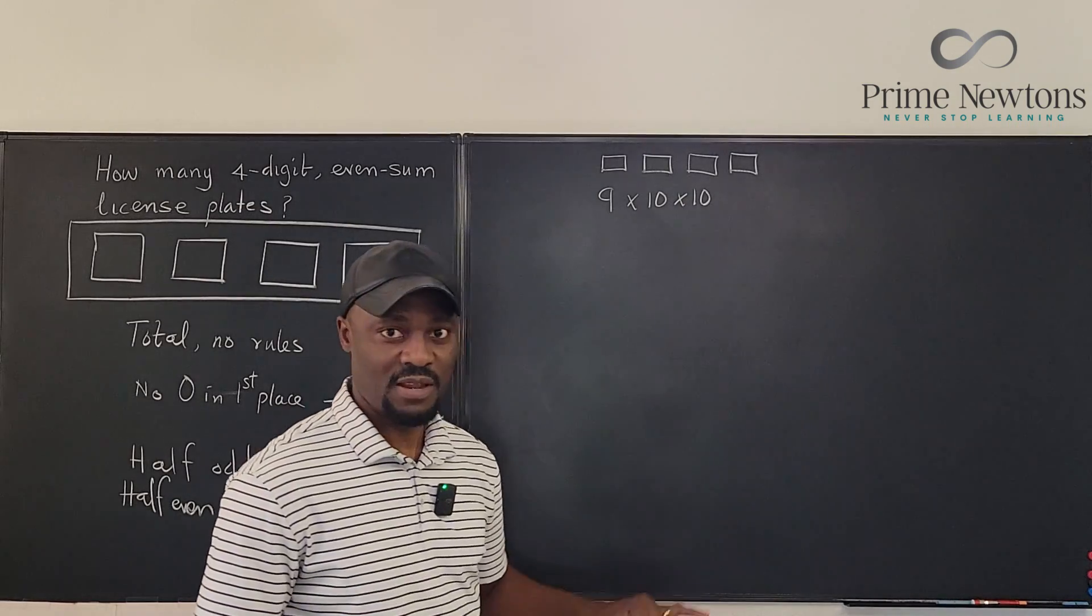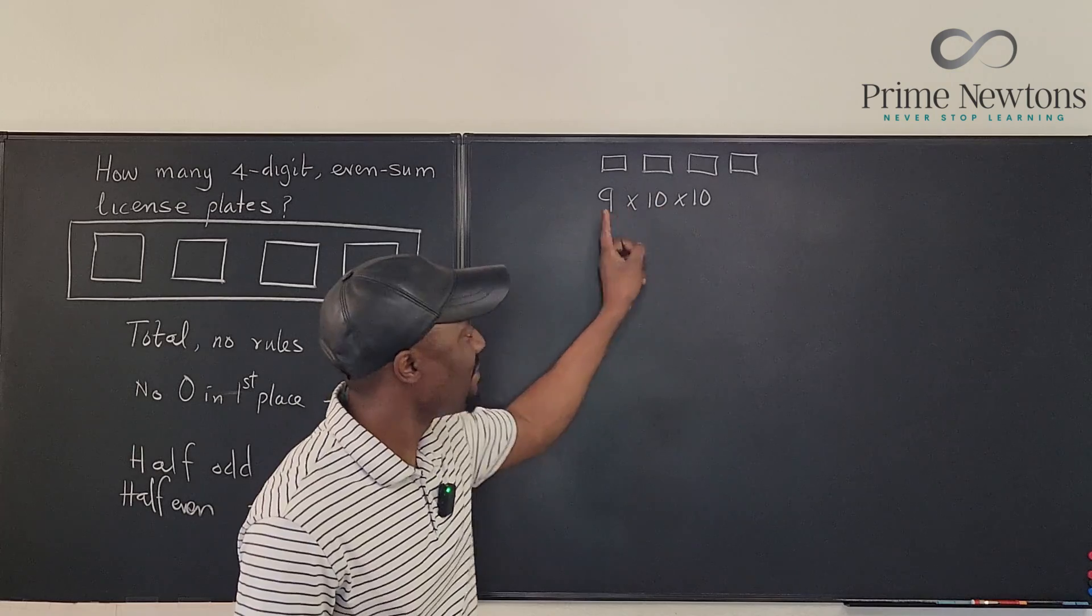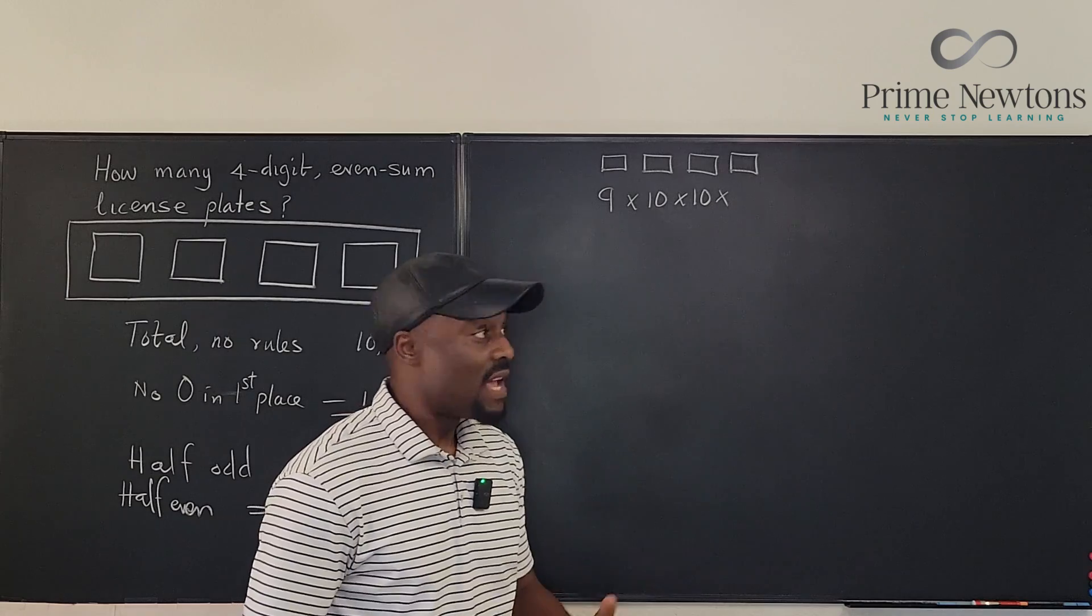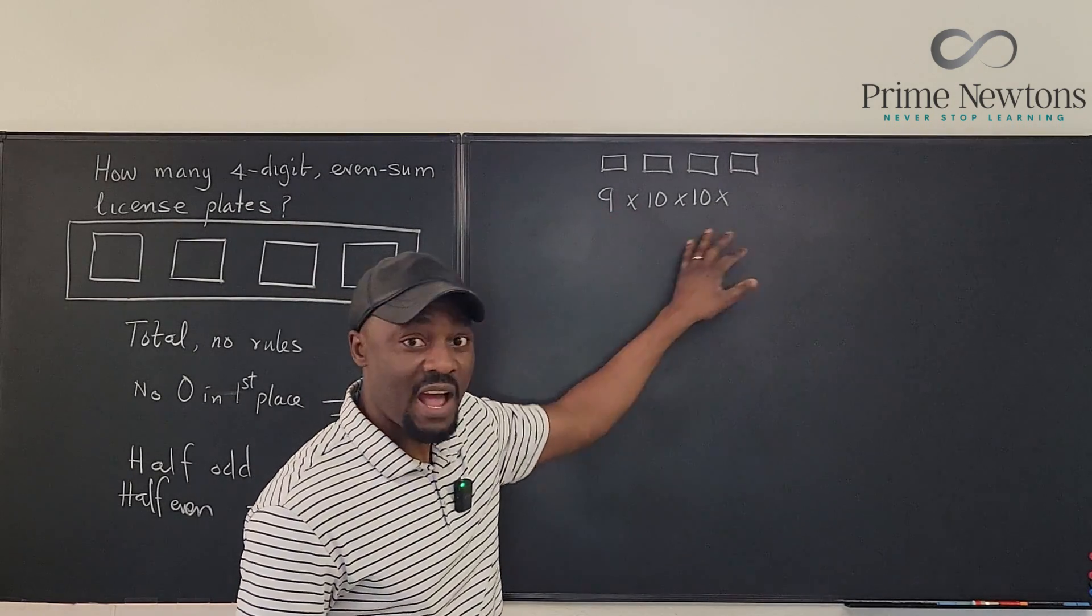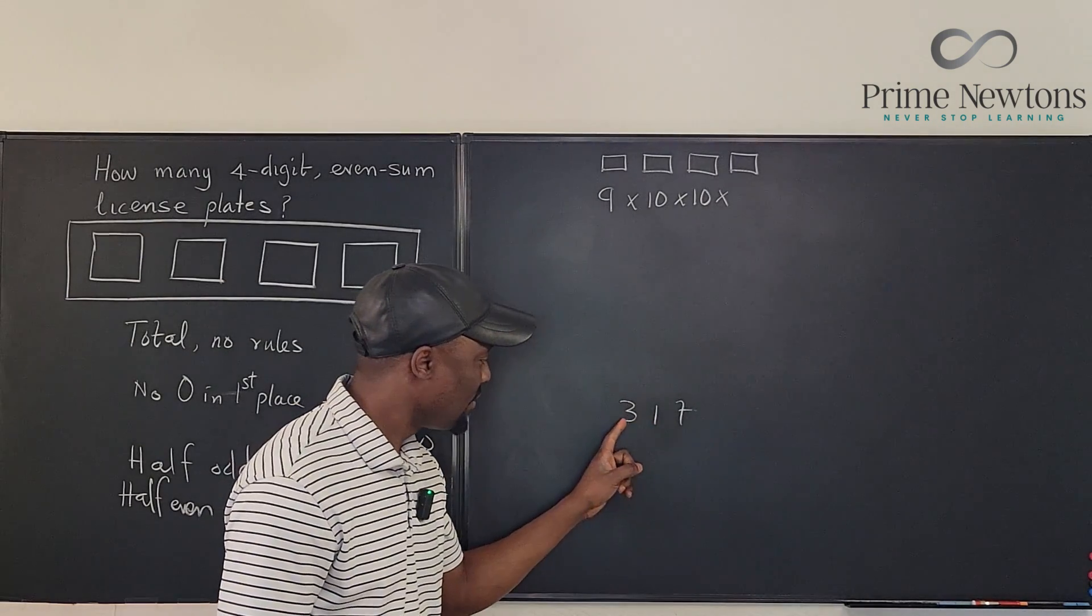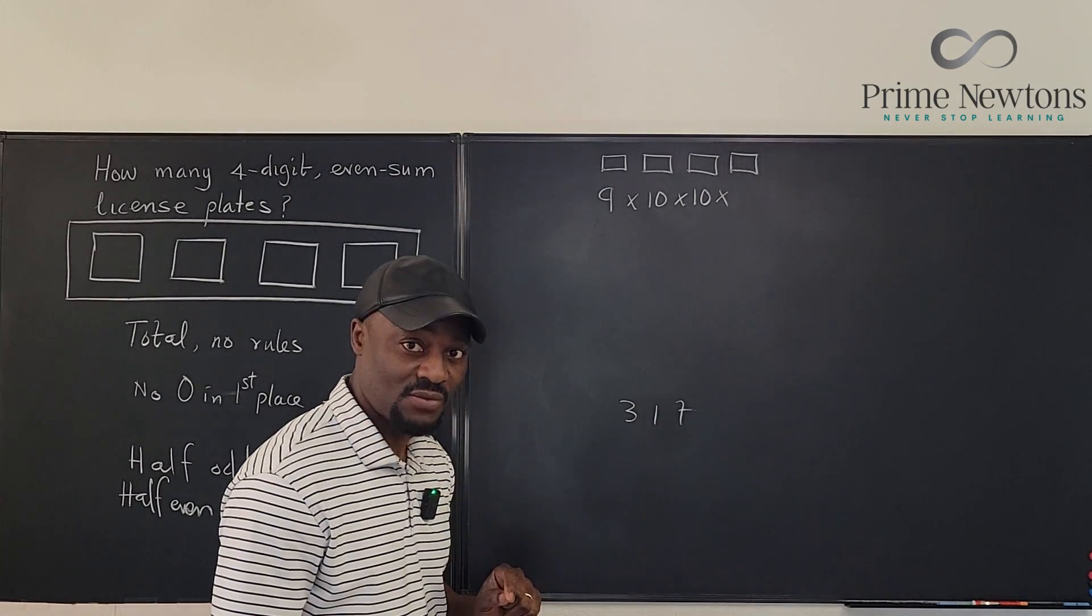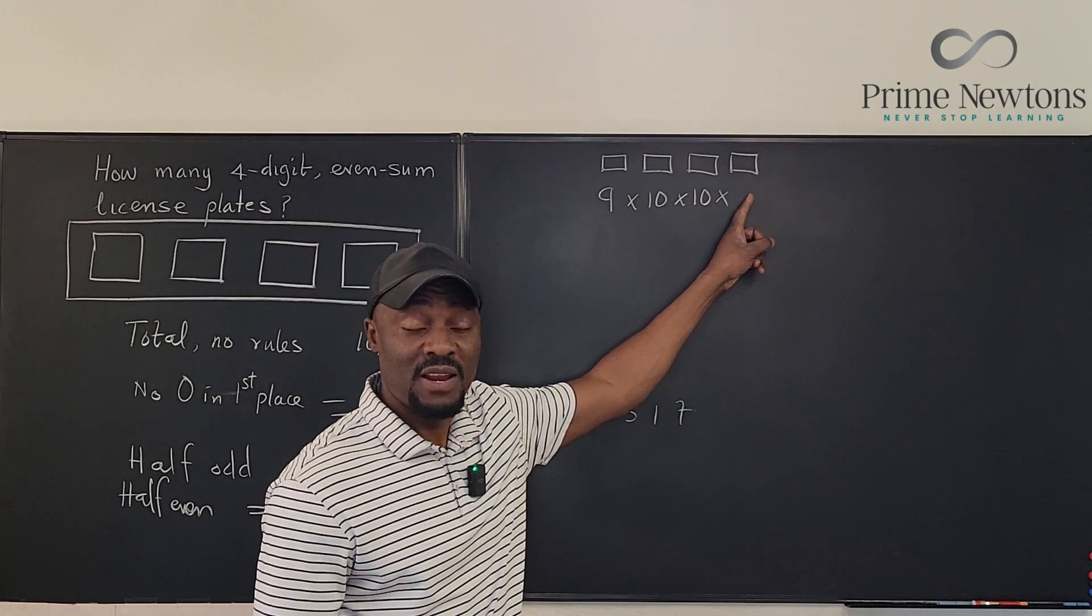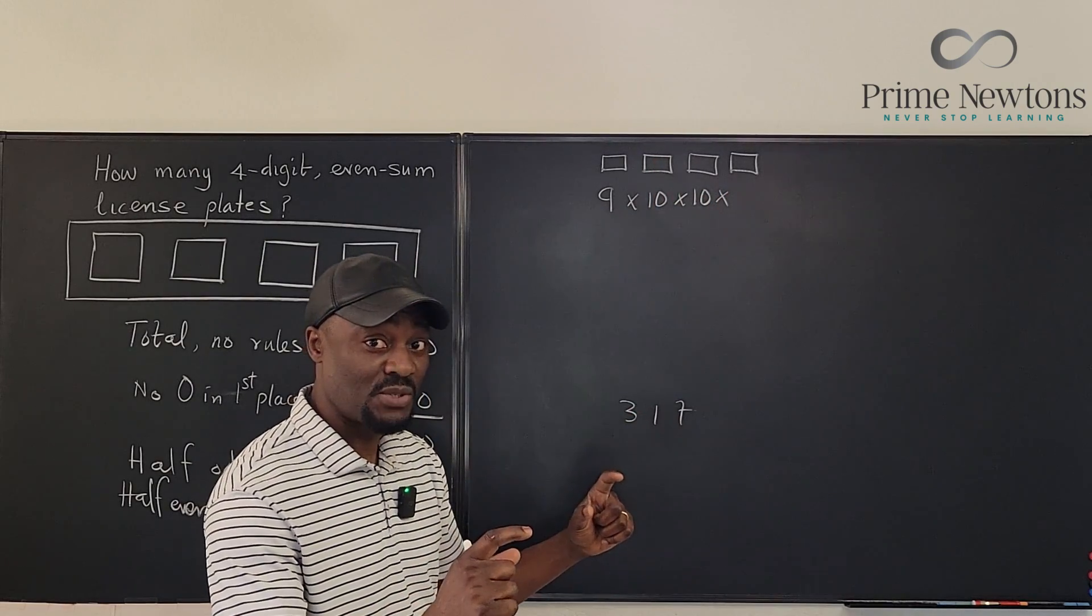Now I have to slow down. I cannot say I have 10 options here because right now I have 900. Now for the last position, I must ask myself, do I have 10 options? No, because if currently the numbers I have arranged together, let's say I have 3, 1, 7 is the number I chose. I'm going to add 3 plus 1 plus 7 is going to give me 11. Is 11 an odd number? Yes. Well, I have to be careful what number I put here.